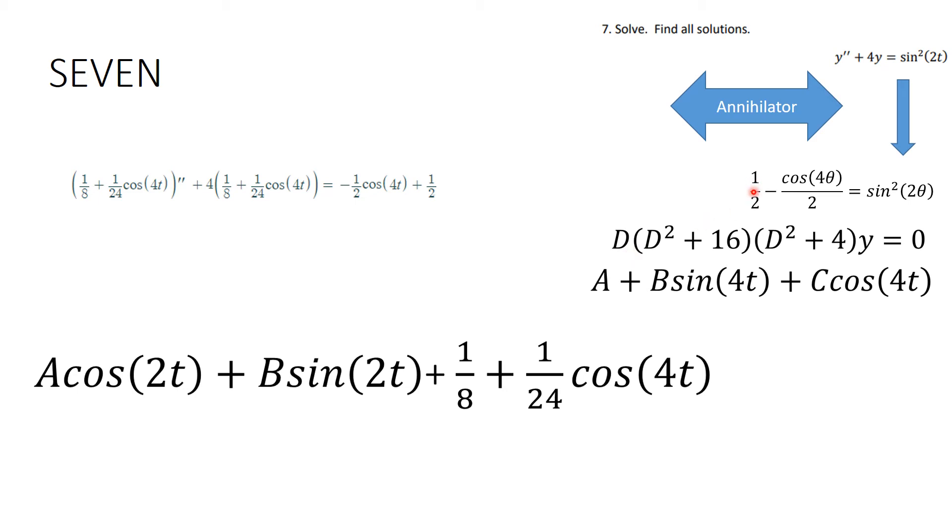So then I take, I know that that means that I'm going to have a constant plus another constant times sine of 4t plus a third constant times cosine of 4t.